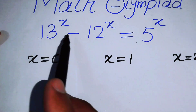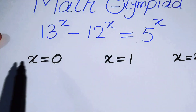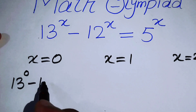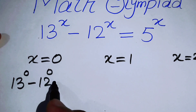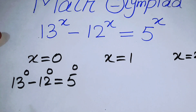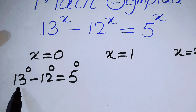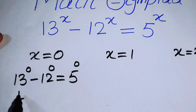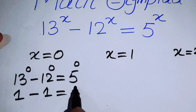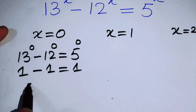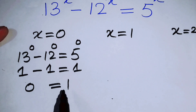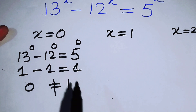We put x equal to 0 on both sides, and it becomes 13 to the power of 0 minus 12 to the power of 0 equals 5 to the power of 0. Since anything to the power of 0 equals 1, this gives 1 minus 1 equals 1, that is 0 equals 1, which is not possible.